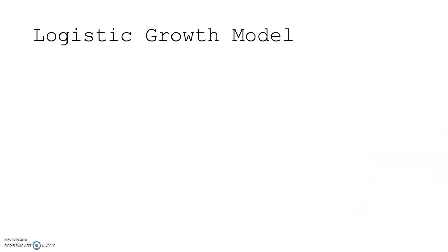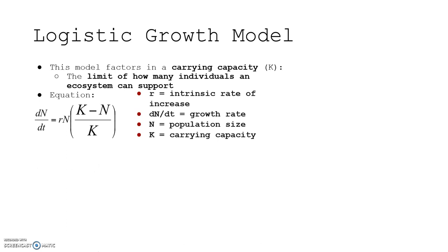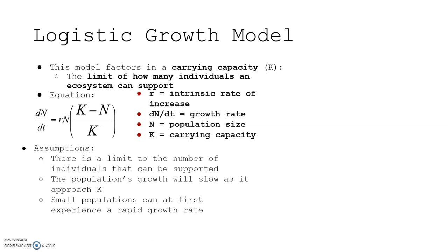The logistic growth model factors in a carrying capacity, symbolized by the uppercase letter K — the limit on how many individuals an ecosystem can support. The assumptions are that there's a limit to the number of individuals that can be supported by the environment, whether it's food, water, or habitat. The population's growth will slow as it approaches K. Small populations can at first experience rapid exponential growth, but then it will level off into that S-shaped curve. It's used to predict populations affected by density-dependent limiting factors.